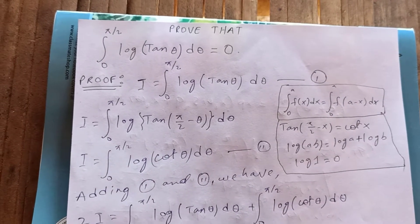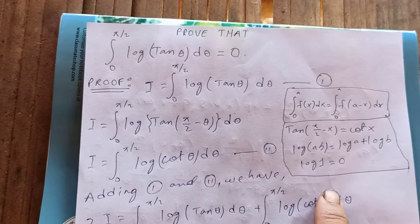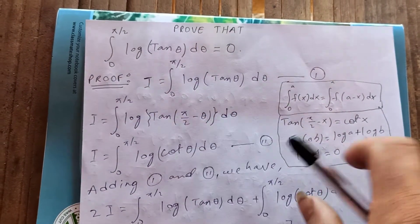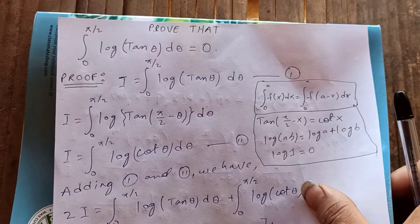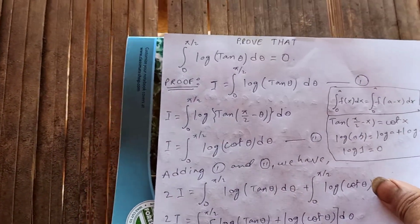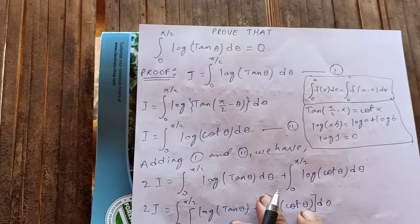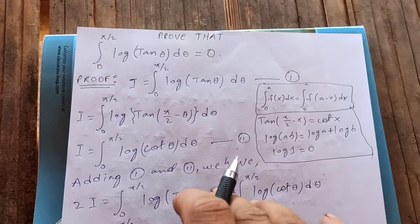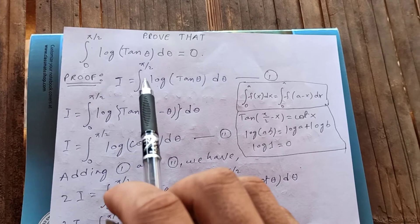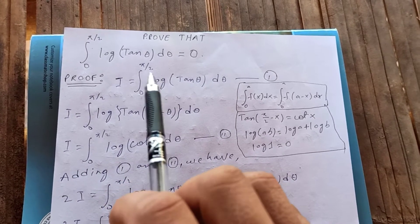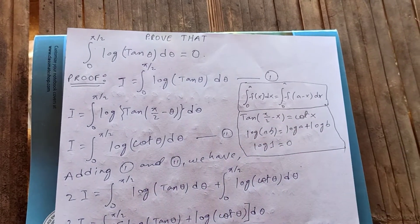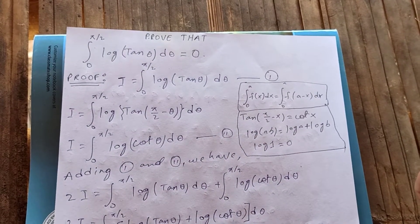Thanks for watching my video today. Let's try to prove another logarithmic integral — a class of logarithmic integral. We want to prove that the integral from 0 to pi over 2 of log(tan θ) dθ is equal to 0. So let's get started.